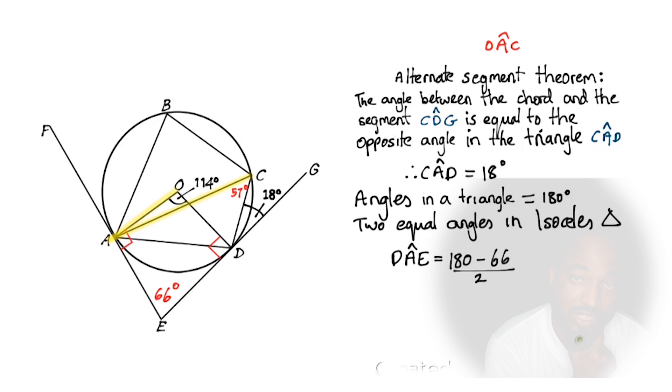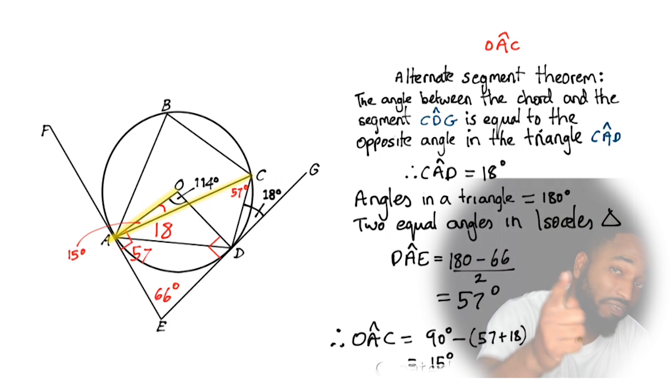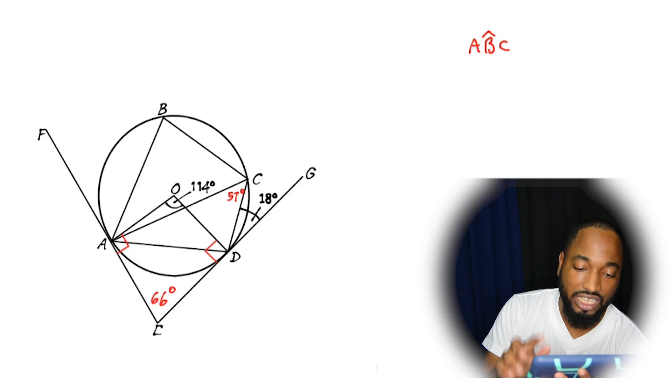DAE is equal to 180 take away 66 divided by 2. This style of formula, you'll have to do this a lot, especially when you're running shade past papers. So that's 57 degrees. So we know this is 57. And we know this is 18. Then this tiny piece here should be easy to find. So OAC is going to be 90 take away 57 plus 18. OAC is 15 degrees. Got it. Let's get to the last one.